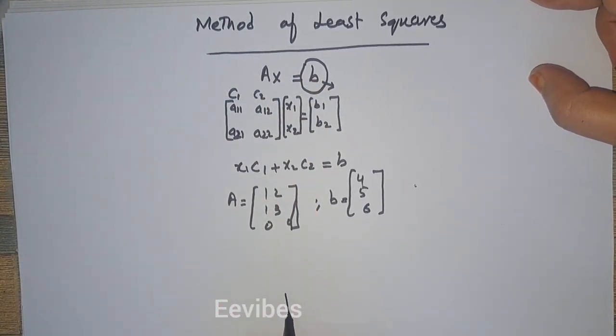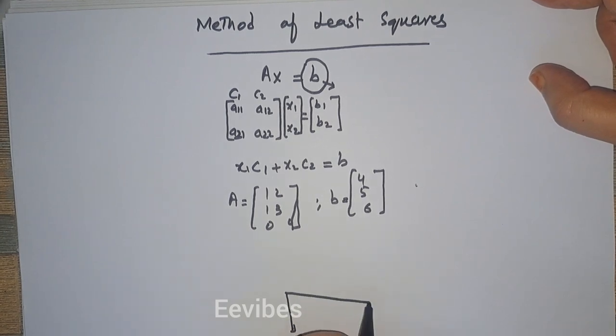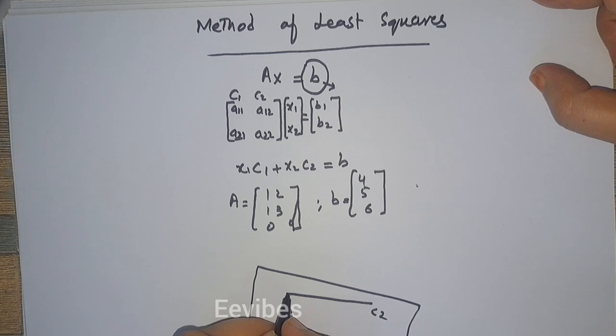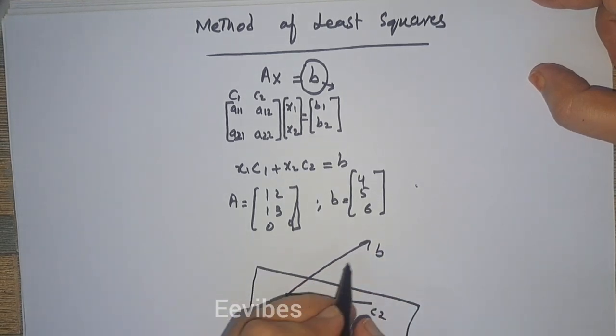Now we can find an approximated solution for this particular system by using the method of least squares, which says that if this is certain column C1, this is certain column C2, and this is the column space of this matrix A, and B lies somewhere over here, then what we do?